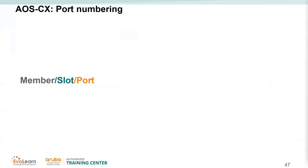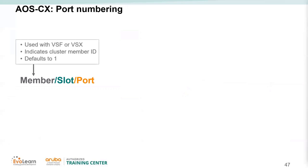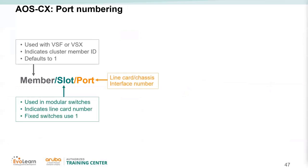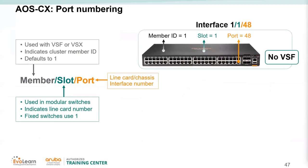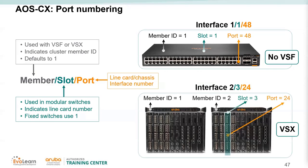For a fixed-port switch, it is a single member — member 1, slot 1. Port 48 would be 1/1/48. Another example: member 2, slot 3, port 24 would be 2/3/24. This naming convention is straightforward and easy to understand once you know the structure.